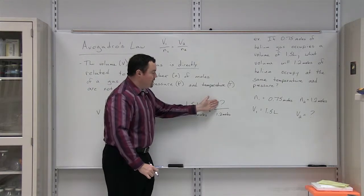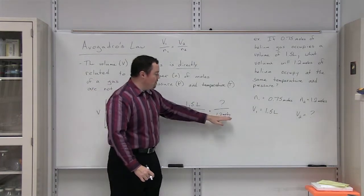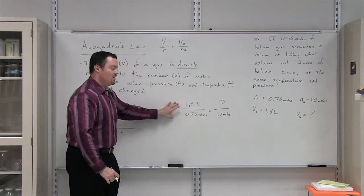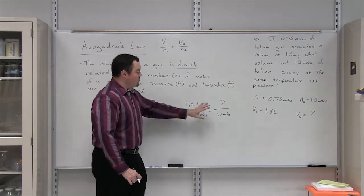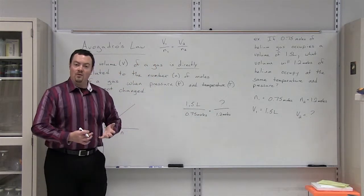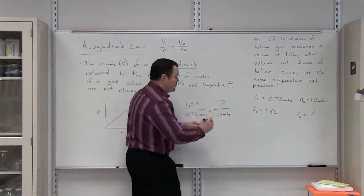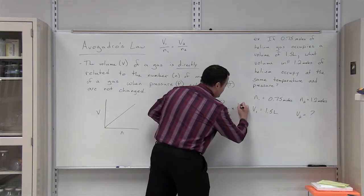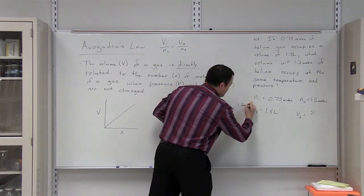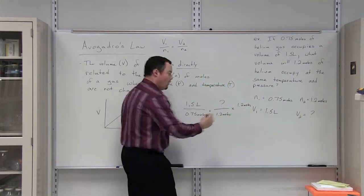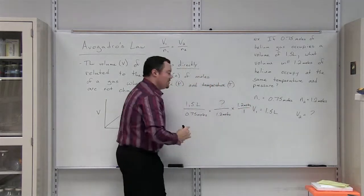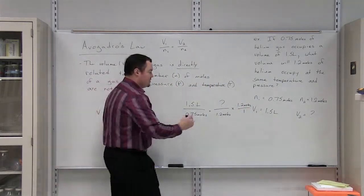In order to solve for V2, we first need to move our 1.2 moles to the left side of the equal sign, so that we have our one variable that we are solving for by itself on one side of the equal sign. In order to do that, we are going to multiply by the inverse, which is 1.2 moles over 1. This allows us to cancel out these values.